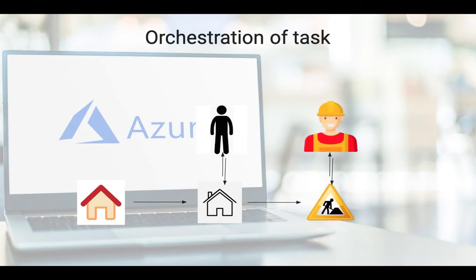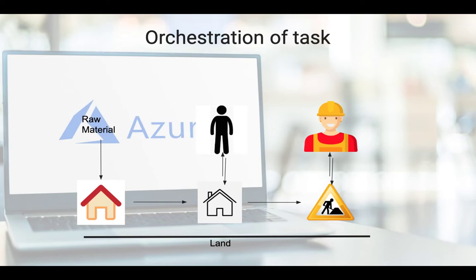The second primary task involves specialized laborers — carpenters, plumbers — who build your house and handle all the fitments. There are multiple tasks happening: defining the architecture, electrical work, plumbing, and all of these individual tasks happen on some sort of platform. Combining all of these tasks together makes the orchestration of tasks.